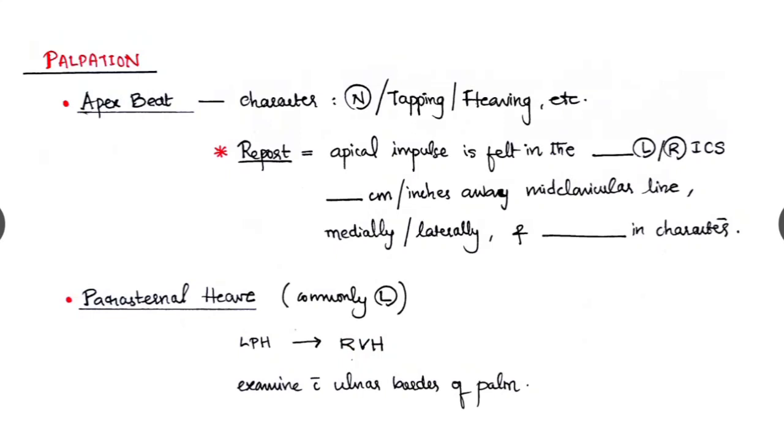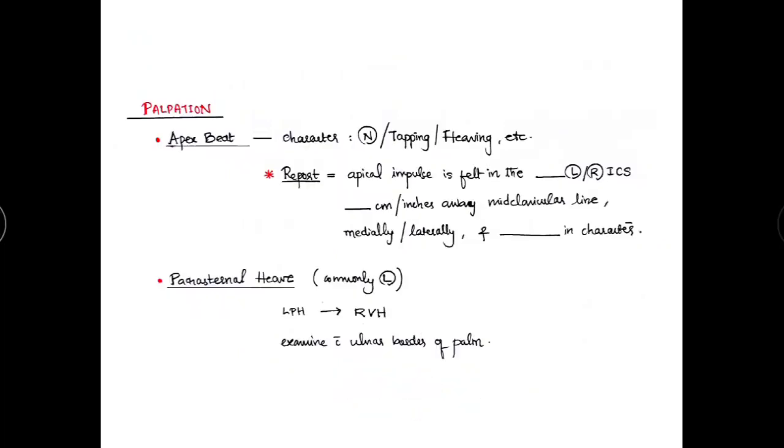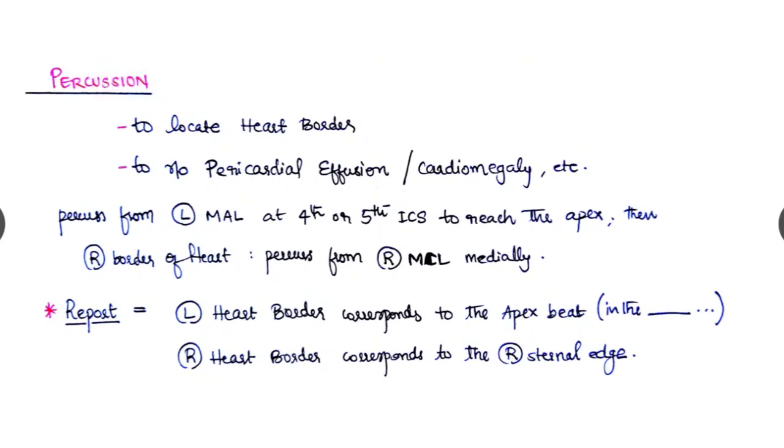And percussion, it's very simple. It is to locate the heart border and just to rule out whether there is any cardiomegaly or a pericardial effusion. We have to percuss from the left mid-axillary line at the fourth or fifth intercostal space coming, percussing medially to reach the apex. Then from the right side, the right border of the heart is located. We have to percuss from the right mid clavicular line coming to the medially.